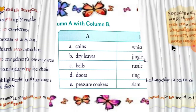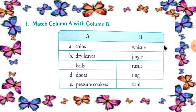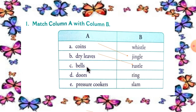Now let's see the exercise: Match column A with column B. Coins — chingle. Dry leaves — rustle. Bells — ring. Doors — slam.